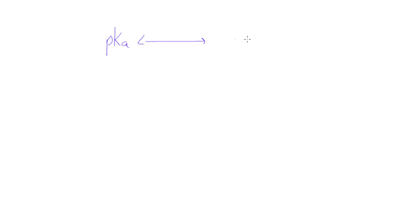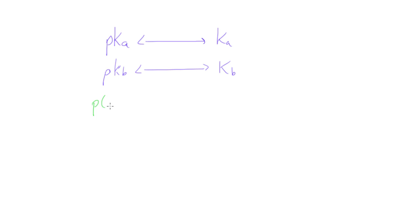Sometimes we have to convert between PKA and KA, and sometimes we also want to convert between PKB and KB. So first of all, the first thing we should mention is: if you take the P of something — here we're taking the P of KA, here we're taking the P of KB — if you take the P of something, basically what that means is we're taking the negative log of that value.